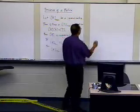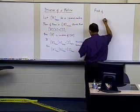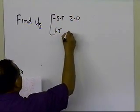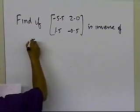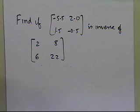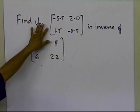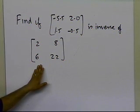For example, if somebody gives you a matrix and asks: is the matrix [−5.5, 2.0; 1.5, −0.5] the inverse of [2, 8; 6, 22]? Keep in mind that in this segment I'm not showing you how to find the inverse — that's in a separate segment. What I'm trying to show is whether this matrix is the inverse of the other, which means multiplying them should give the identity matrix.